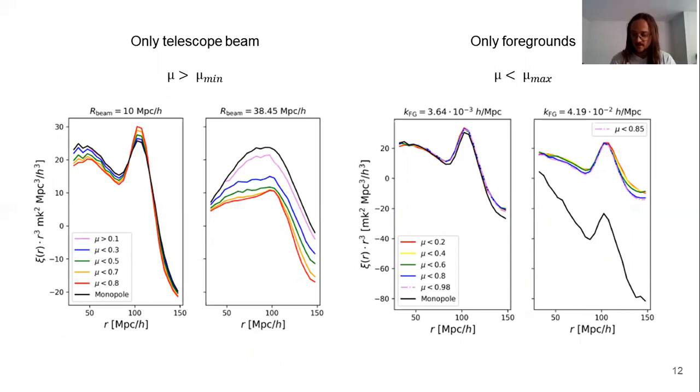the shape of the two-point correlation function has varied a lot. And we have to go to a minimum value of the mu parameter equal to 0.6, 0.7 to reach some convergence, and also to see the BAO signal, more or less at 100 megaparsecs.